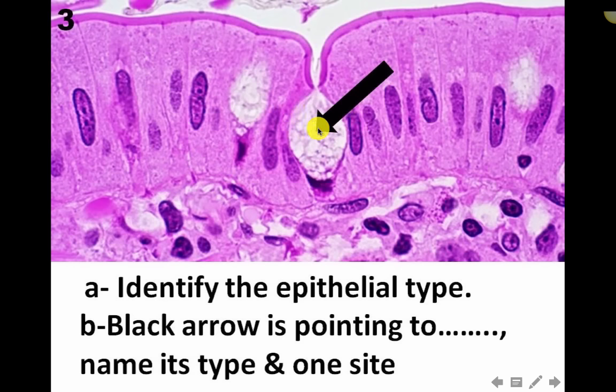The simple columnar with goblet cells - the black arrow points to the goblet cell. Name its type: it is exocrine, mucous-secreting, and according to the number of cells it is a unicellular gland. So it is a unicellular mucous-secreting exocrine gland. One site: the small and large intestine.